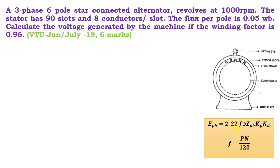First, 2.22 is a constant. F is the frequency, which can be calculated using the formula f = pn divided by 120. Here, p is the number of poles. They have given six poles and the speed of the alternator is 1000 rpm. So f = 6 × 1000 ÷ 120, which gives 50 hertz.